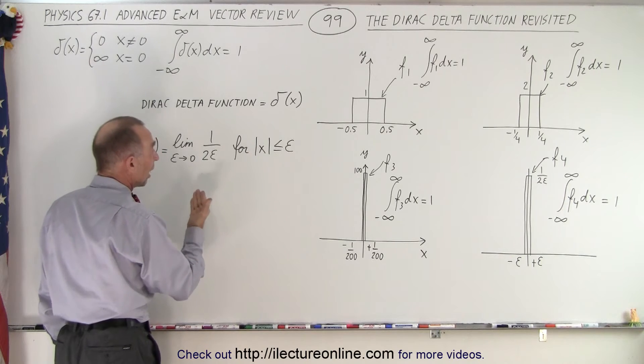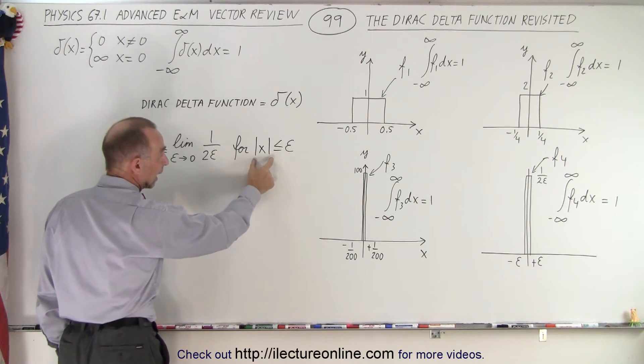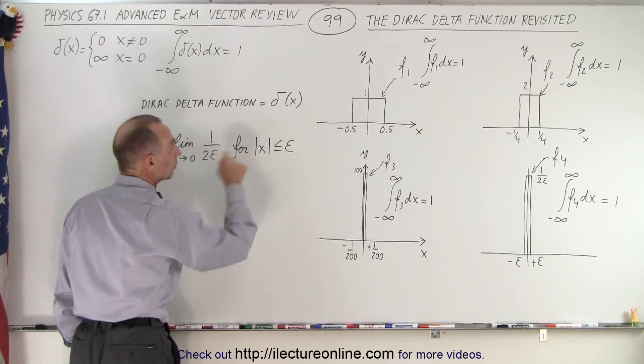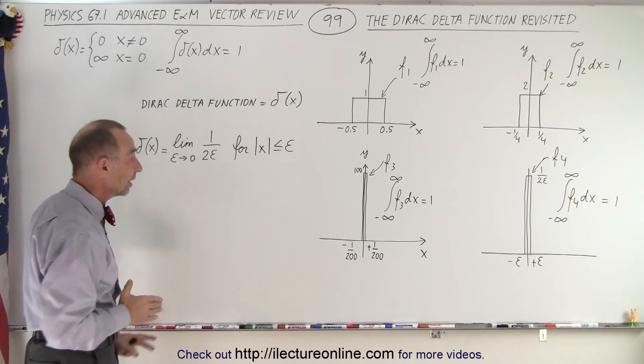That is how we define the Dirac delta function for all values of x. We take the absolute value sign, so that the absolute value sign of x is less than or equal to epsilon. So that is by definition the Dirac delta function.